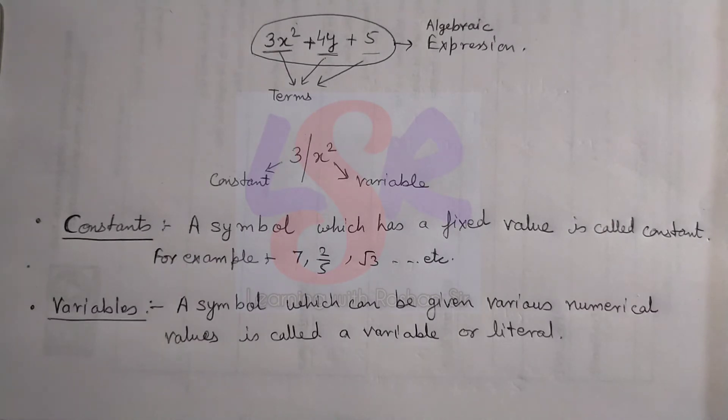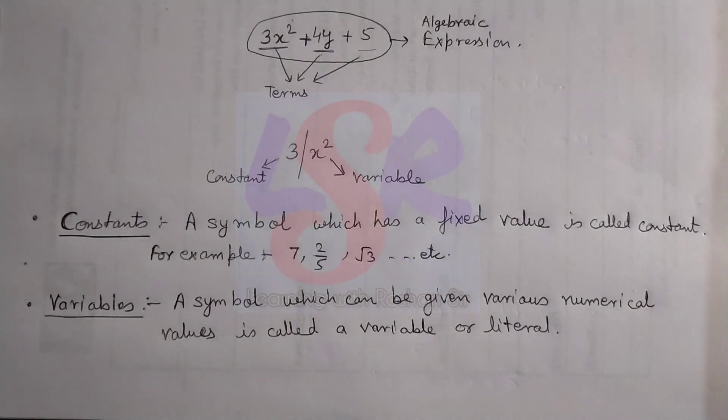The next one is variables. A symbol which can be given various numerical values is called a variable or a literal. In other words, a symbol which can be given different types of numbers or different values.